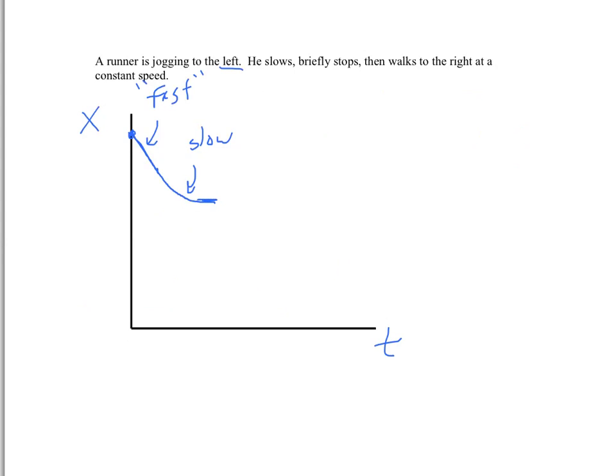Then he's walking to the right at a constant speed. So if he's going right, he's going to have to have a positive part. And it's constant, so it needs to be a straight line. So that represents to the right at a constant speed because it is a positive slope and it is not changing. So this would be a reasonable graph for this situation.